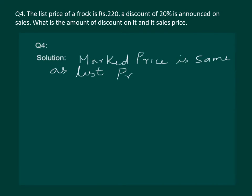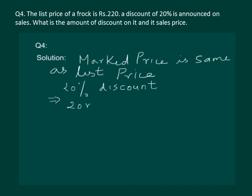To solve this question we will use the unitary method, in which we calculate for a single thing and then multiply by the number of things. In the question, 20 percent discount is announced. Using the unitary method, let's take the marked price as rupees 100 — if 20 percent discount is there on a marked price of rupees 100, that means 20 rupees discount on an MP of rupees 100.